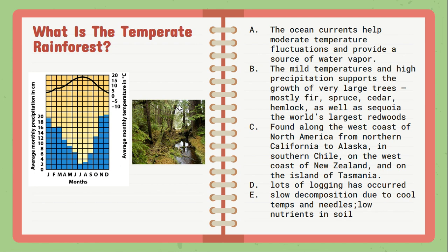Moving on to the temperate rainforest — looking at the climatograph, you can see far greater amounts of precipitation and more consistent temperatures compared to the previous two biomes. This biome is usually located near coastal areas, where ocean currents help moderate temperature fluctuation and provide more water vapor and humidity. So they get mild temperatures and lots of precipitation, which supports really large trees. You find temperate rainforests in California, Alaska, and southern Chile. Similar to the taiga, logging also occurs here.